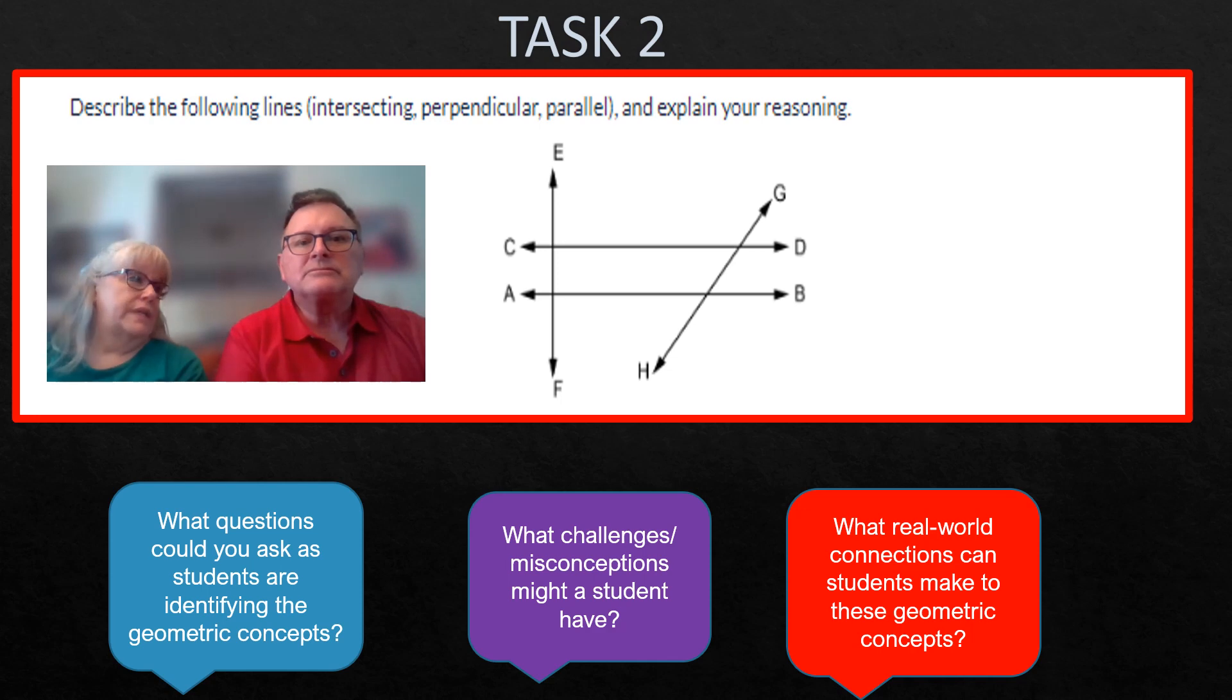What questions could you ask as students are identifying the geometric concepts here? Which lines do you see intersecting? And then how do you know? Give me a pair of intersecting lines. I know that CD and EF intersect. And give me some reasoning as to how you know that. Because I see them cross over each other. So that's the key idea. If they're intersecting, they're somehow crossing each other.